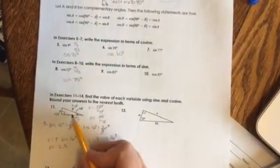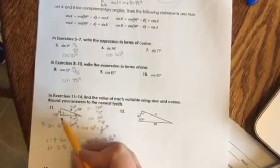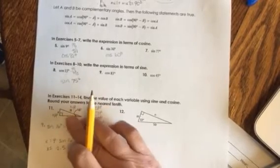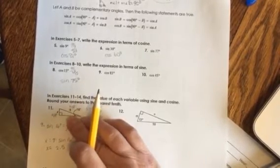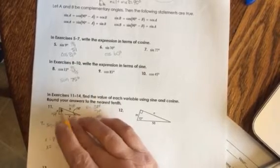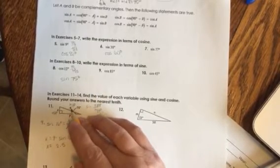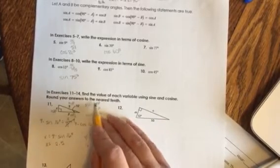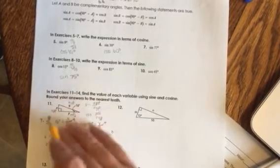Then they're going to start having you do some problems to actually find sine and cosine. If I was doing an example like this one, if I wanted to find X and Y, I'm going to cover up the Y part for now. If I label the parts that I know, X would be my opposite side, 9 is my hypotenuse, so that means I'm going to deal with sine.